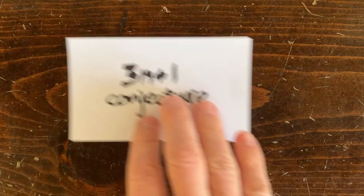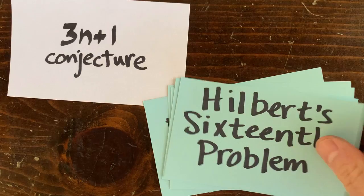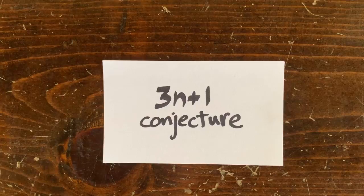Welcome to the famous 3n plus 1 conjecture. I'm Kevin Knight. There's a lot of famous unsolved problems in mathematics, all deep mysteries. But in this series, we're going to focus on the 3n plus 1 conjecture, because in order to understand it, you only need to know how to add and multiply numbers.